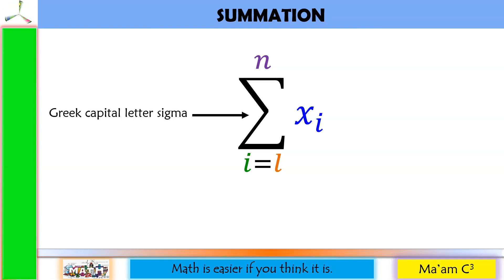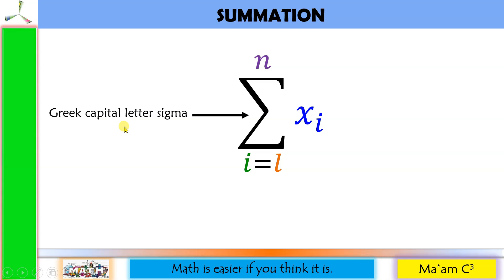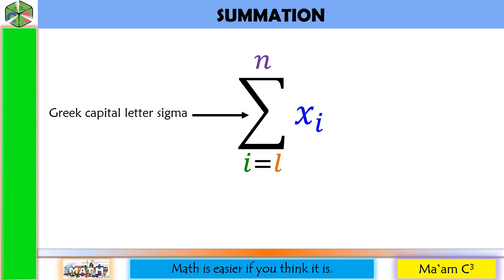This is the Greek capital letter sigma. It indicates summation. Notice that I specify here capital, because if it is not capital, it does not look like this and it does not mean summation. A small letter sigma represents a standard deviation, which you will learn some other time.